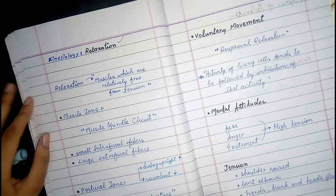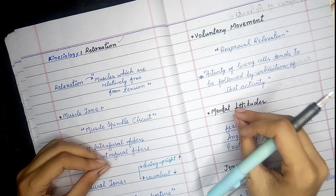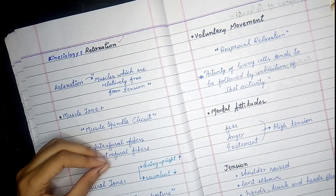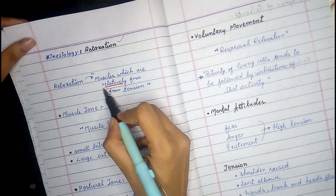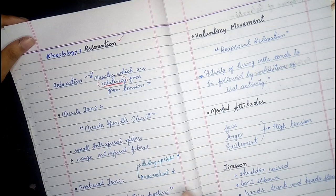The definition states that muscles in which the tension is low and the force of contraction is low are said to be relaxed. Alternatively, muscles which are relatively free from tension are relaxed. The word 'relatively' is a very important word here.